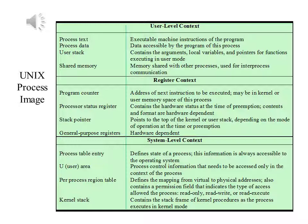When a process is not running, the processor status information is stored in the register context area. The system-level context contains the remaining information that the operating system needs to manage the process. It consists of a static part, which is fixed in size and stays with the process throughout its lifetime, and a dynamic part, which varies in size through the life of the process. One element of the static part is the process table entry, which is part of the process table maintained by the operating system with one entry per process. The process table entry contains process control information accessible to the kernel at all times; hence, in a virtual memory system, all process table entries are maintained in main memory.